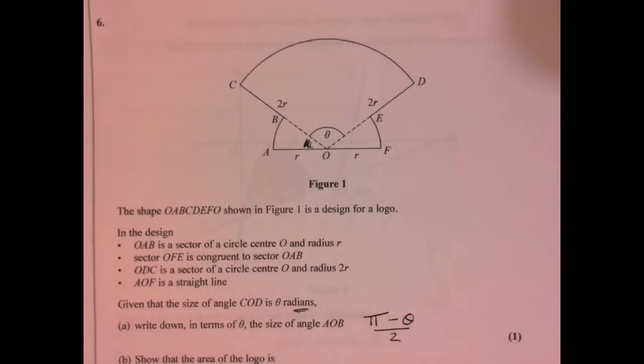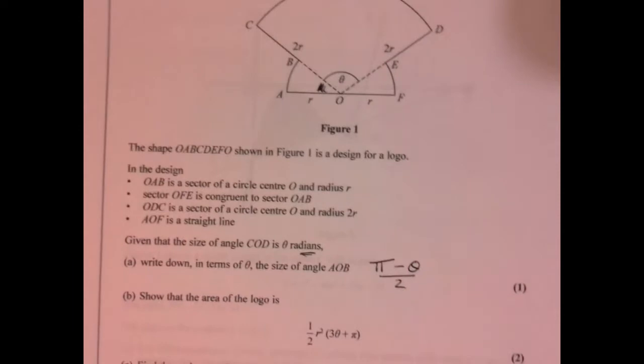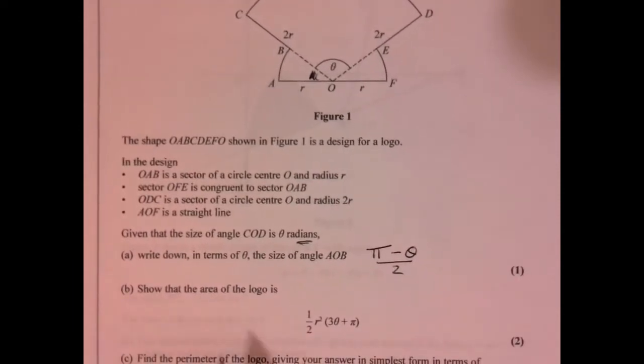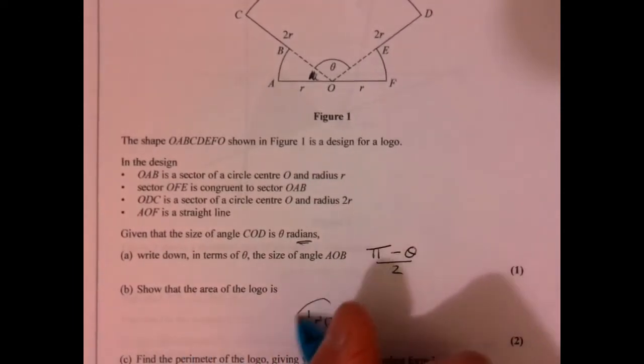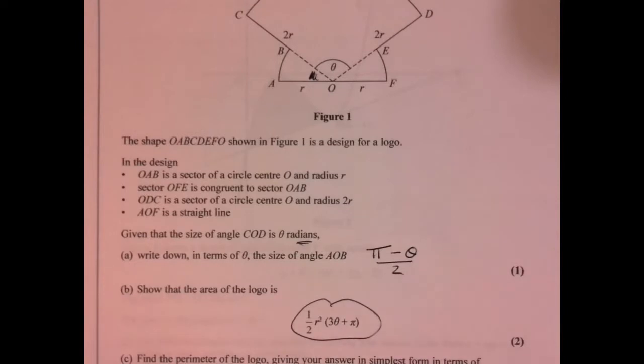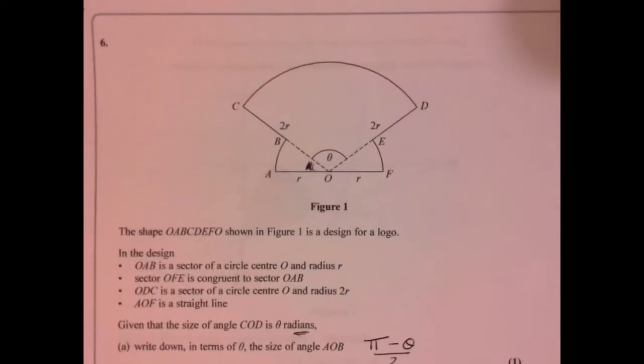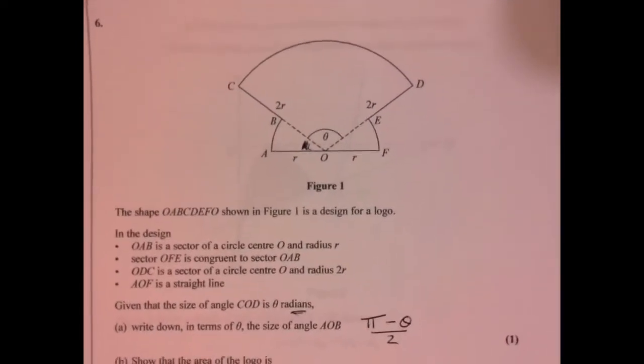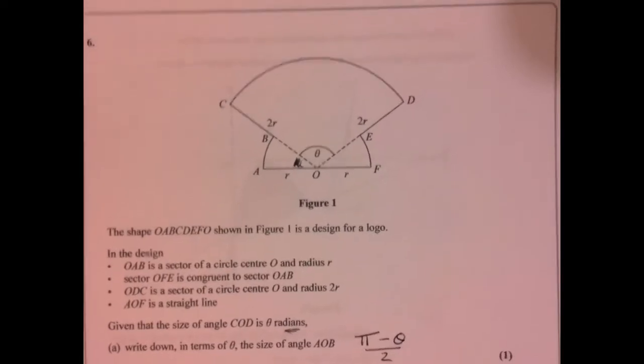Now part B. So let's just move that so you can see part B. It says show that the area of the logo is this thing here. Let's go back up here. Let's start thinking about what's going on here.